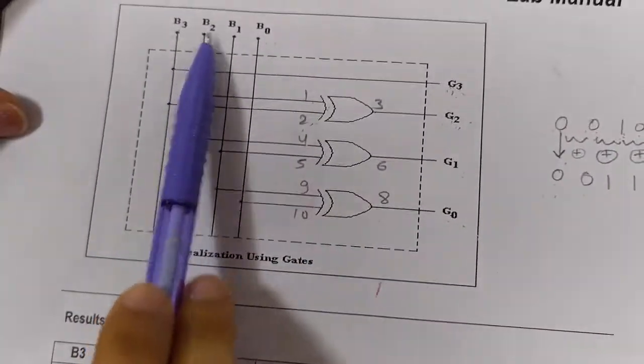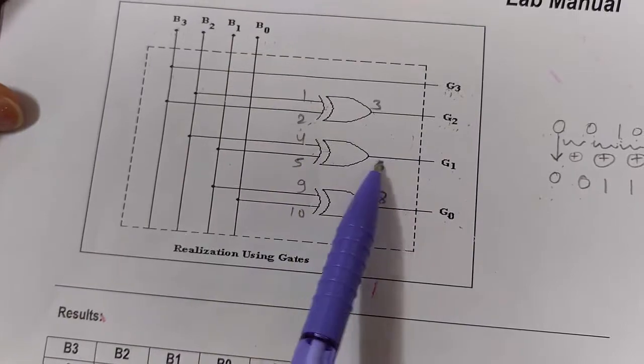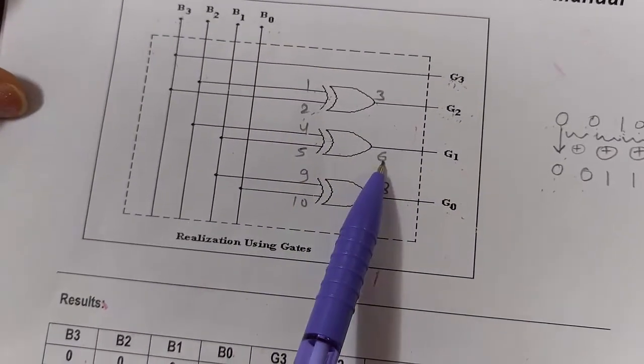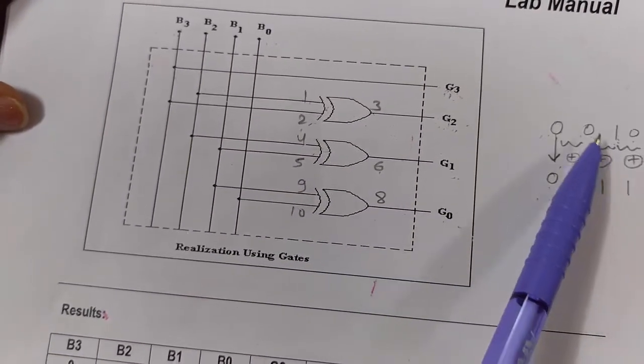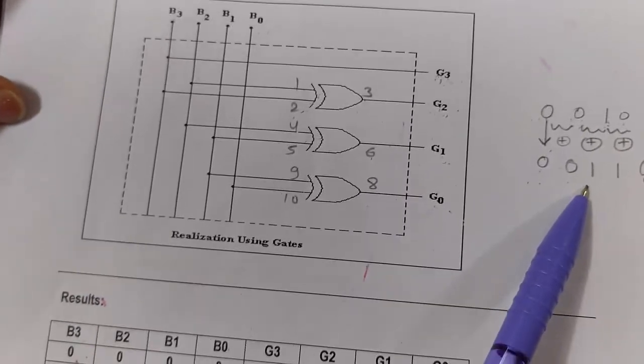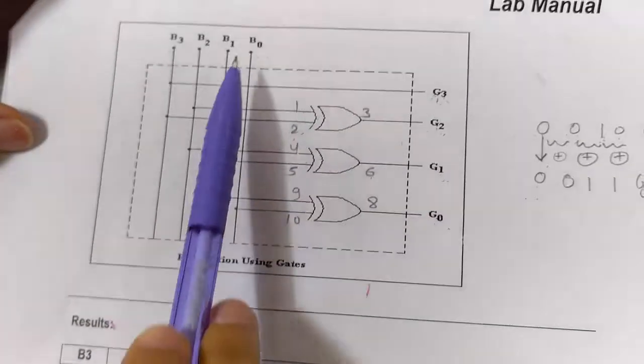Similarly, we connect B2 to pin 4 and B1 to pin 5, and take output from pin 6, which is our G1. The second and third digits are XORed and we get the grey code.